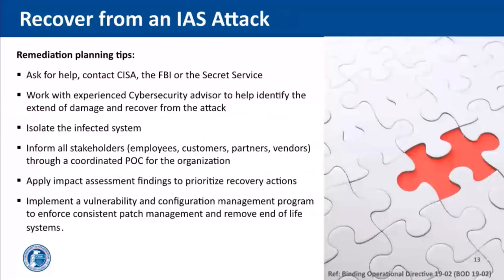So what do you do once an internet accessible system is compromised, and how do you prevent it from happening again? Here are some remediation planning tips. First, ask for help — you can contact CISA, the FBI, or the Secret Service for additional support. Work with an experienced cybersecurity advisor to help identify the extent of the damage and recover from the attack. Isolate the infected systems and phase your return to normal operations. Finally, inform business stakeholders such as employees, customers, partners, and vendors through an assigned vulnerability coordination POC for your organization.